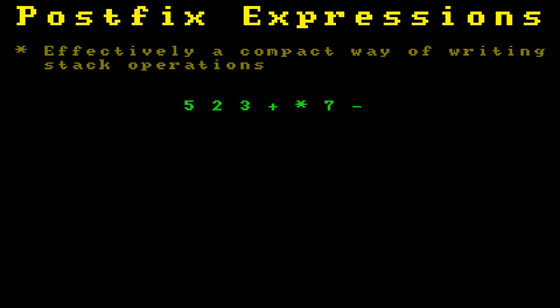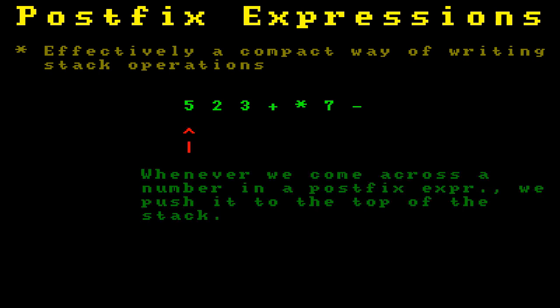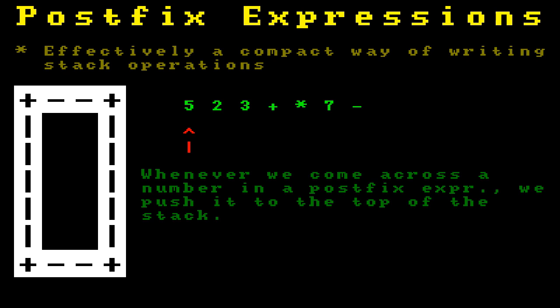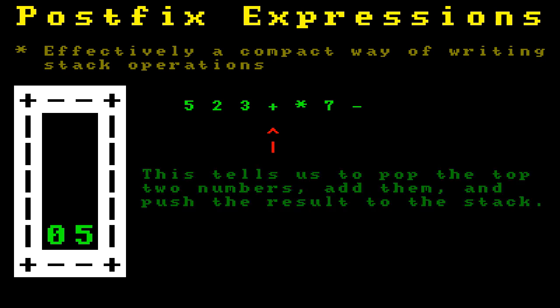This is what a postfix expression looks like. To most people, this looks like nonsense. However, today you're going to stop being most people. Whenever we come across a number in a postfix expression, we push it to the top of the stack. So we see 5, so we push 5, then 2, so we push 2, then 3, so we push 3. Then we see plus. This tells us to pop the top two numbers — so right now that's 2 and 3 — add them, and push the result to the stack. In this case, that's 5.